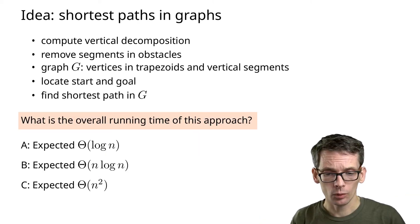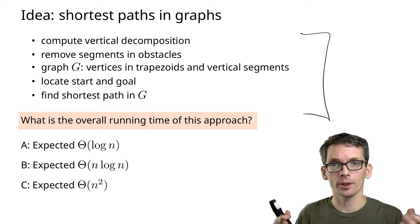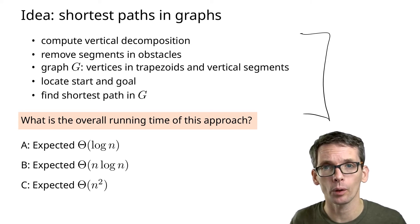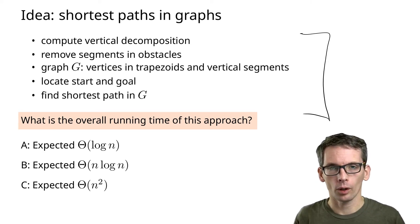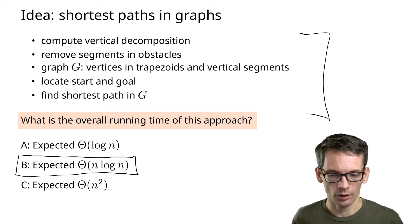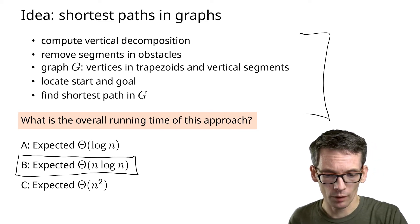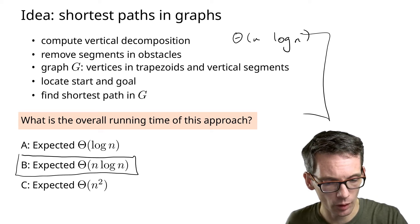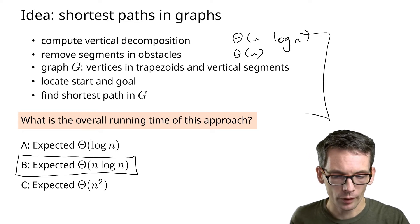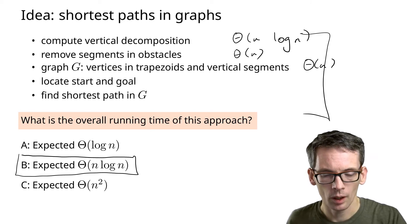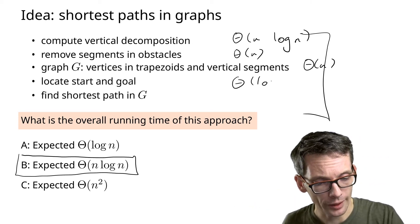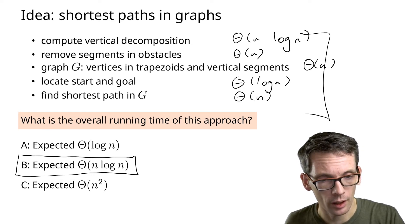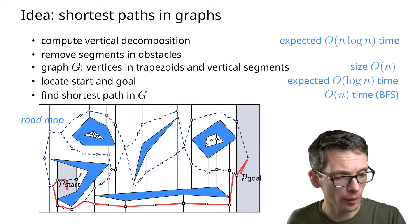What is the running time on a scene with obstacles of overall complexity n? Is it O(log n), O(n log n), or O(n²)? It is O(n log n). Let's look at the running times of the various steps: computing the vertical decomposition takes O(n log n); removing segments inside obstacles takes linear time; computing the graph from the vertical decomposition takes linear time; locating start and goal takes O(log n) time; and finding the shortest path with breadth-first search takes linear time. The dominating term is n log n.